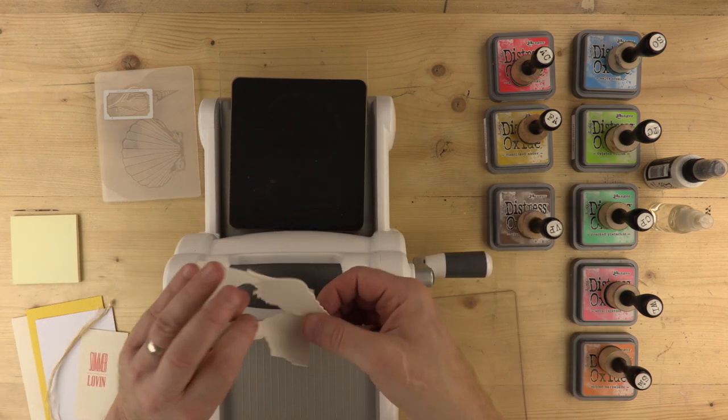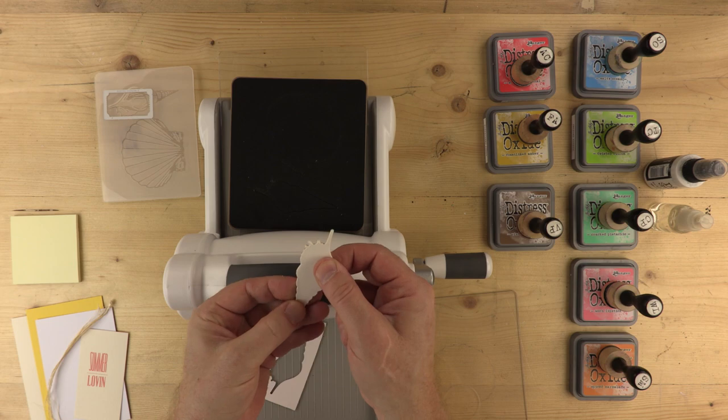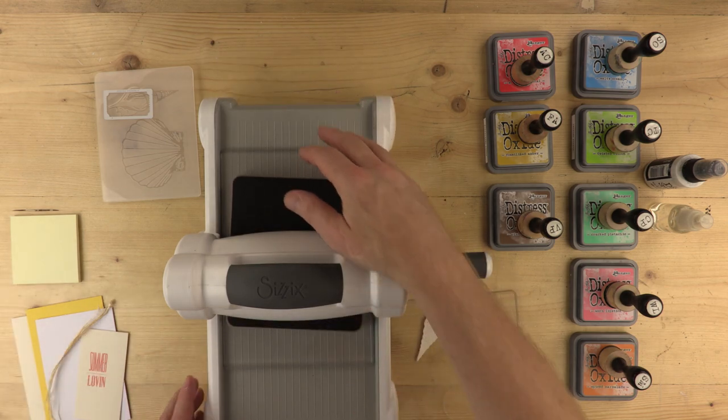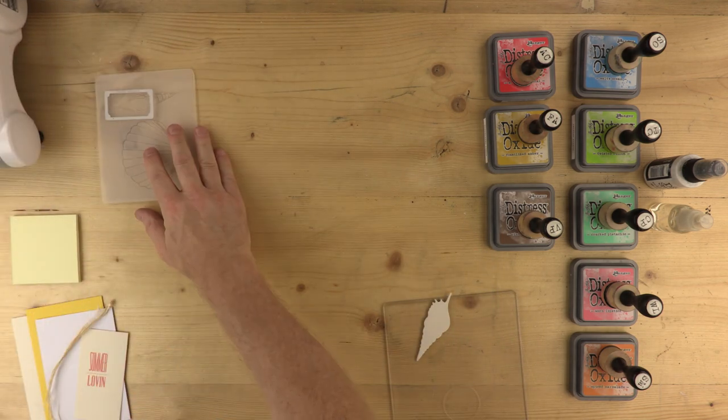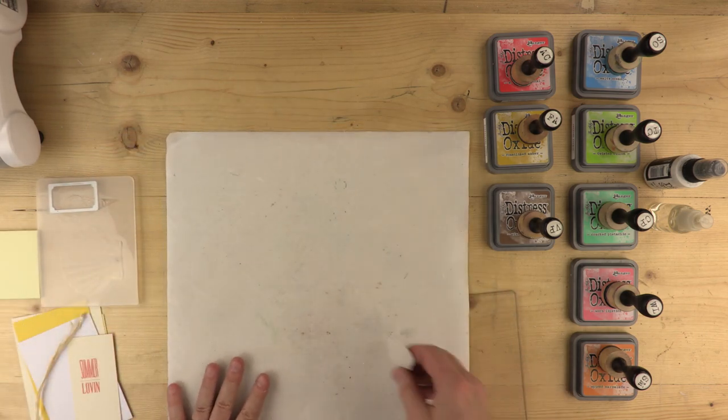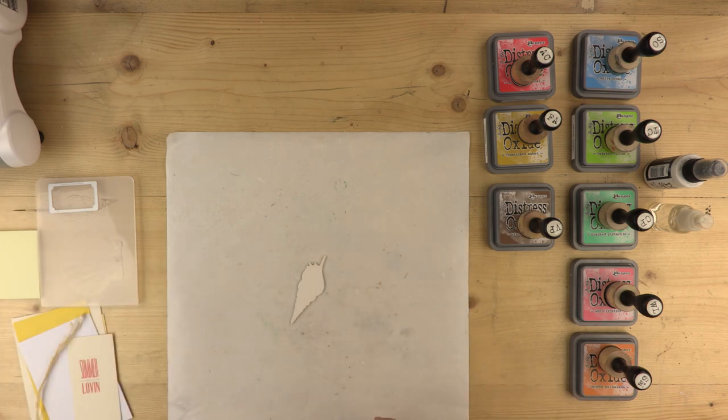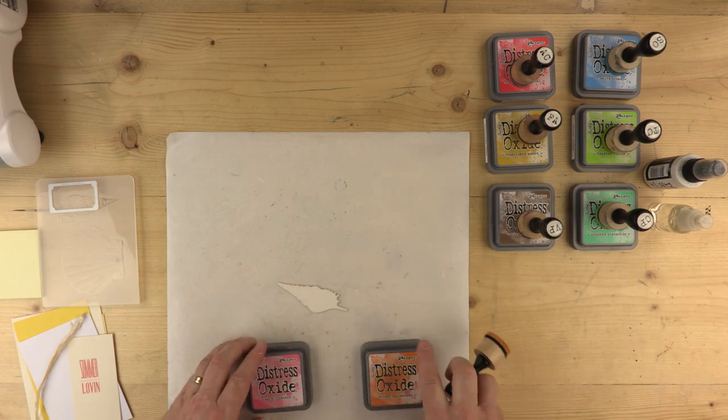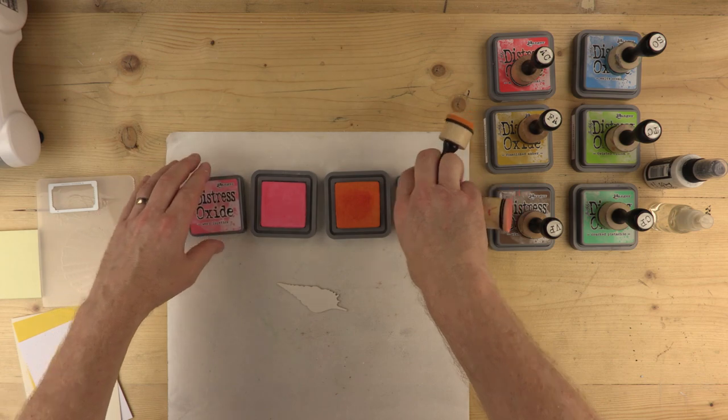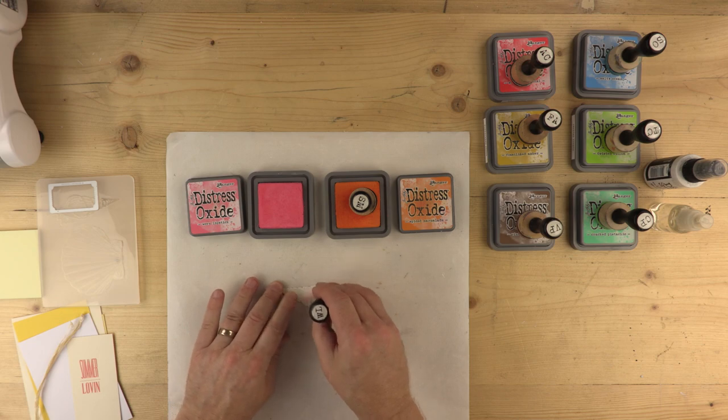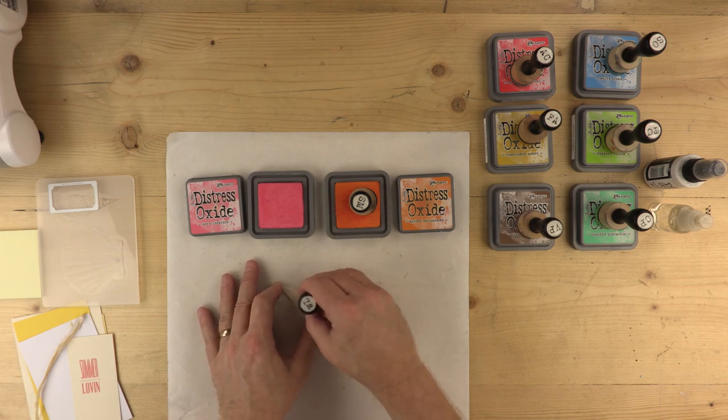So there we have it. There's my little shell and it's all ready to ink up. We're going to be using quite a few of these distress oxide inks. So I'll just take my machine over there for the time being and lay out my craft mat. This is to prevent any ink getting onto my work surface. And I'm going to start off with a couple of colors, worn lipstick and spiced marmalade. I want quite a subtle effect, I don't want it to be too strong.